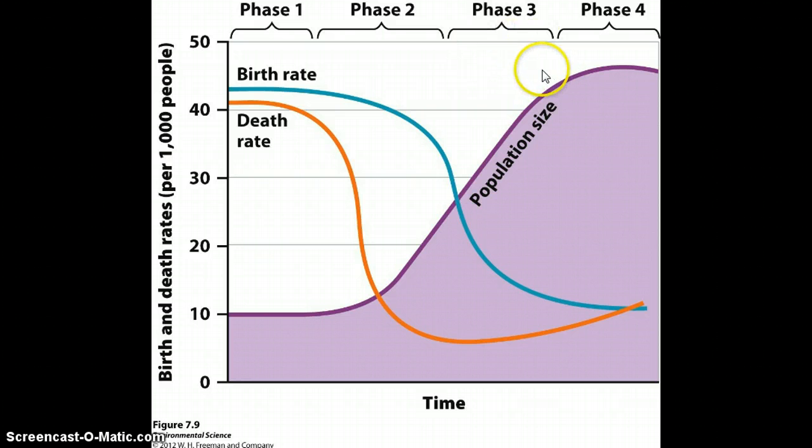As the country becomes industrialized, the birth rate is going to actually decrease and approach the death rate. As that happens, population growth is going to slow quite a bit.